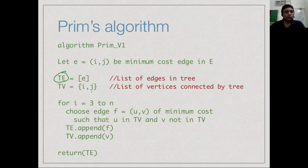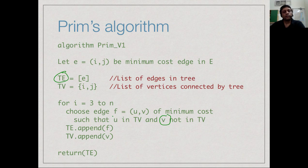Remember that a tree has exactly n minus 1 edges total. We started with the first edge, so we add n minus 2 more. Each time we choose the smallest edge which has one endpoint in the tree and one endpoint outside the tree, connecting a new vertex. After doing this n minus 2 times, we have connected all vertices and have a spanning tree.